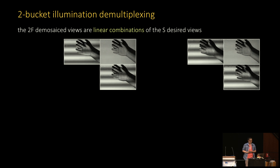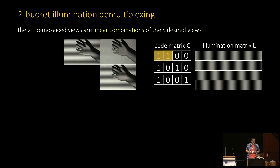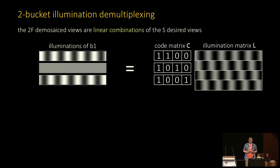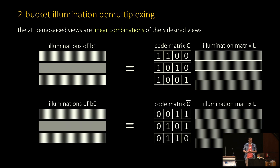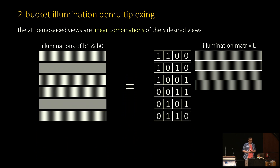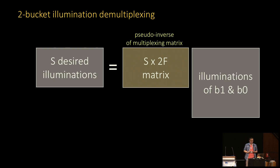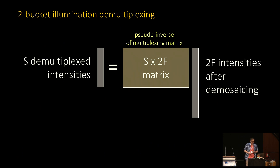Although at this point we have full-resolution views of the scene, they're not exactly the ones we want, because a pixel's bucket may be active for more than one illumination condition, meaning the bucket's intensity corresponds to a sum of two or more illuminations. More generally, the illuminations of the bucket-one images are given by the product of the code matrix and the illumination matrix, and the illuminations for bucket zero are given by the product of the binary complement of the code matrix and the illumination matrix. So combining the buckets' contents, we have a single linear relation between the illuminations we have and the ones we want, defined by a non-square multiplexing matrix, and recovering the original illumination is just a matter of multiplying by the pseudo-inverse of the multiplexing matrix.